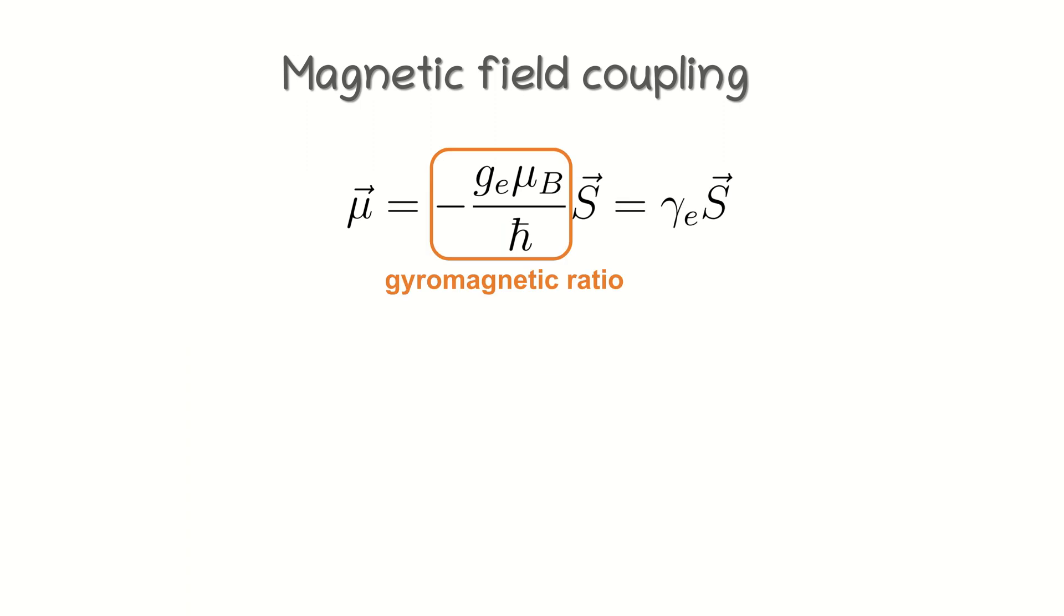The proportionality factor is called the gyromagnetic ratio of a particle or system. It is the ratio of its magnetic moment to its angular momentum or spin and is often denoted by the symbol gamma. The energy of a magnetic moment of a particle in a magnetic field is given by a scalar product of the magnetic moment and the magnetic field it experiences. It is known from classical electrodynamics.